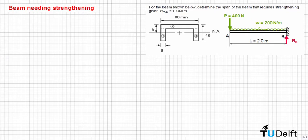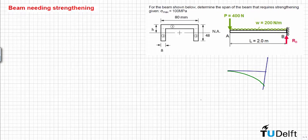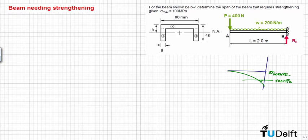What this problem is asking is we need to determine the profile — the distribution of the stress. So if this is the normal stress or bending stress, we need to determine for which points of the structure the bending stress is larger than 100 MPa. All the region above 100 MPa would need to have its strength increased.